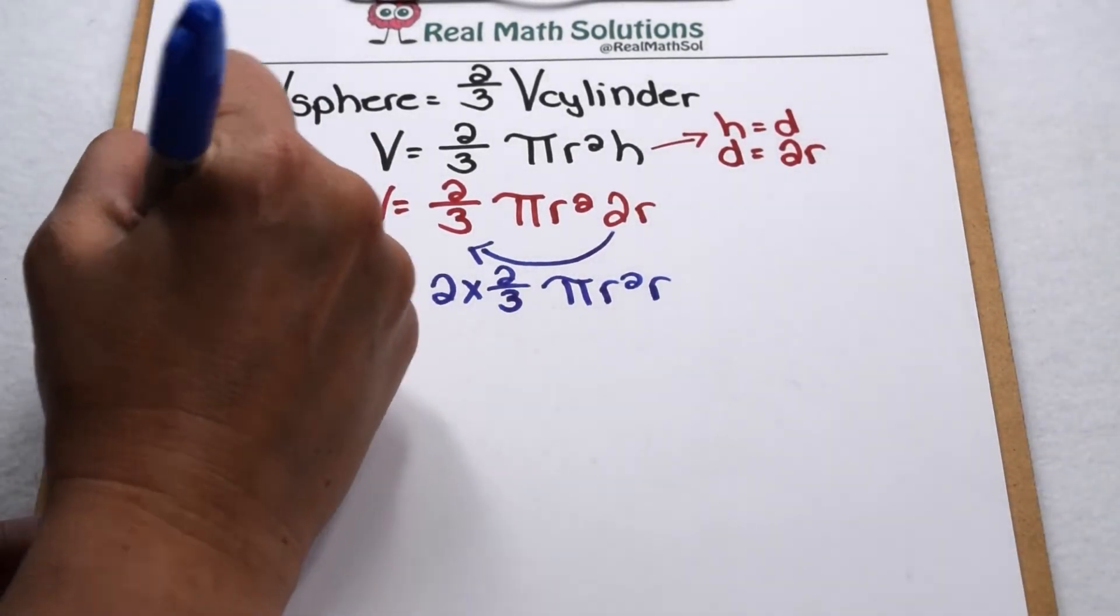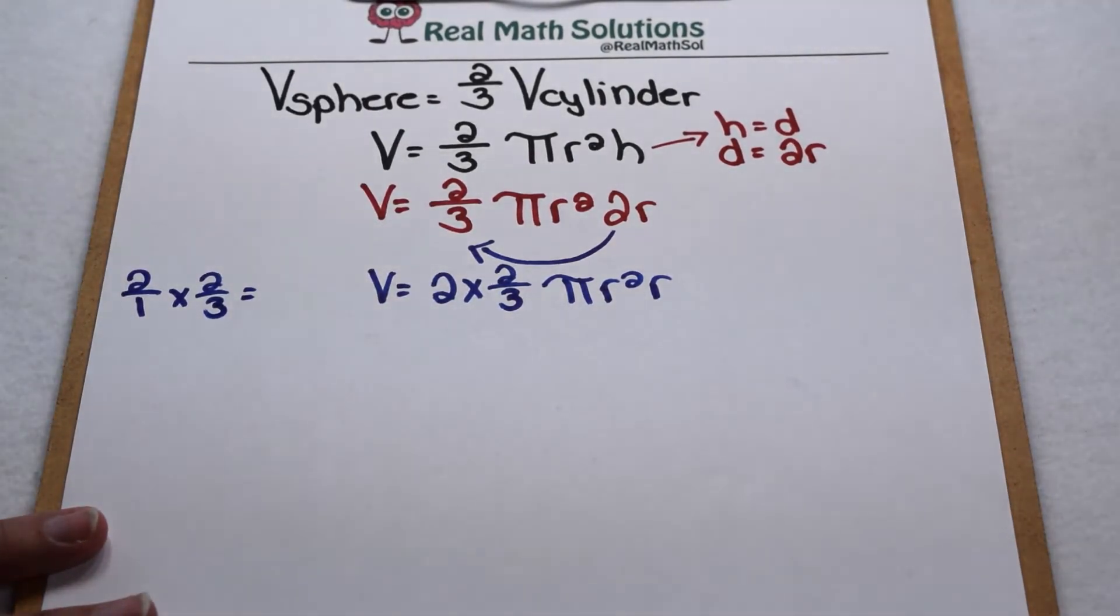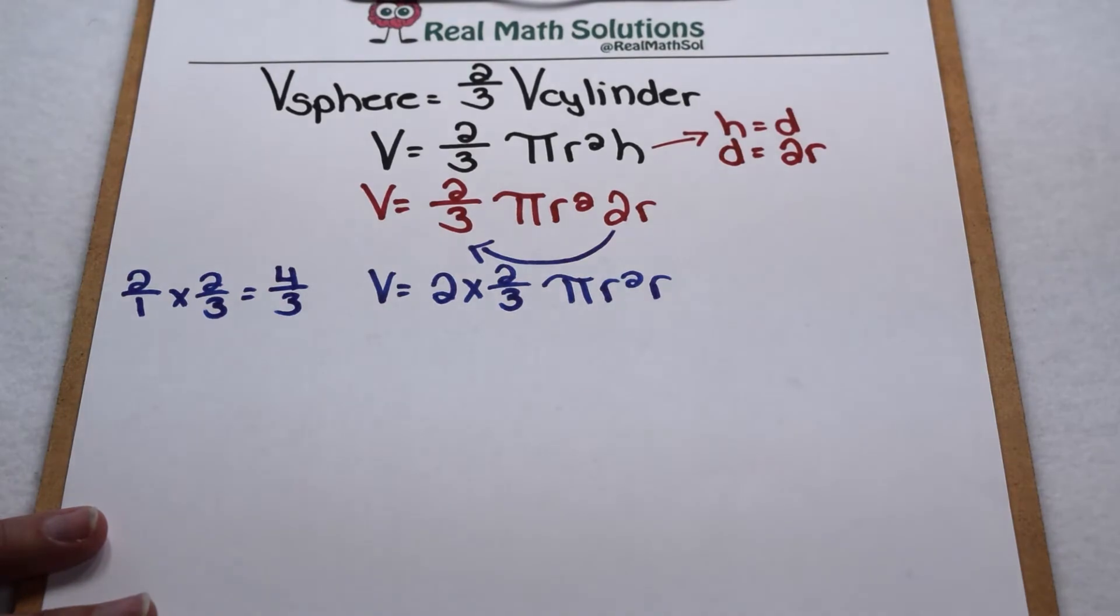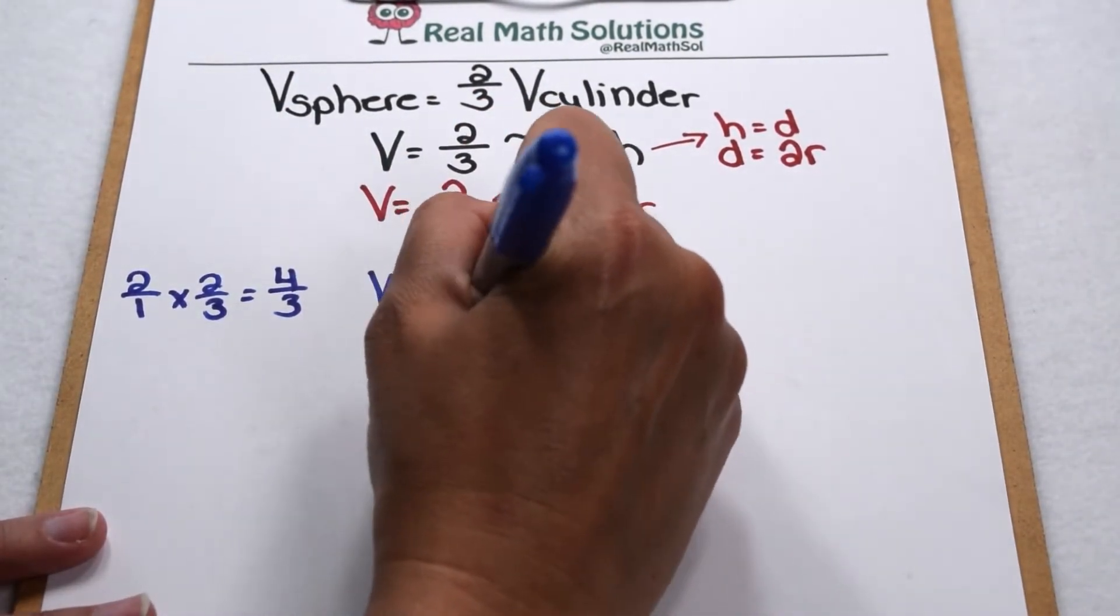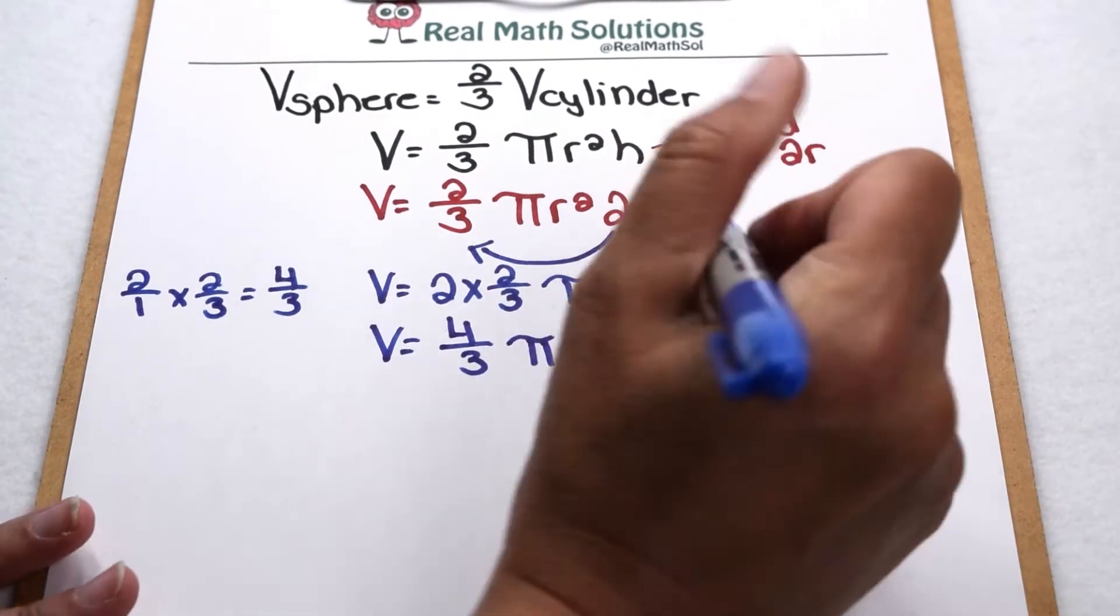Let's go ahead and multiply those together. Two times two-thirds means we would have two over one times two-thirds. Multiply your numerators, multiply your denominators, and we would have four-thirds. So let's put that back into our equation. Now we have four-thirds pi r squared r.